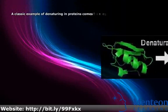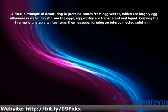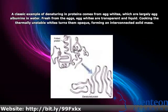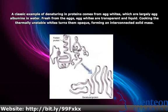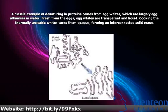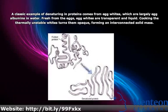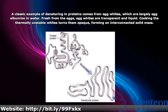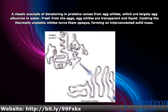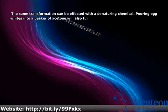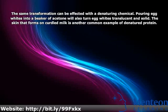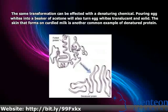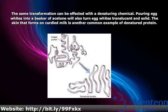A classic example of denaturing in proteins comes from egg whites, which are largely egg albumins in water. Fresh from the eggs, egg whites are transparent and liquid. Cooking the thermally unstable whites turns them opaque, forming an interconnected solid mass. The same transformation can be effected with a denaturing chemical: pouring egg whites into a beaker of acetone will also turn egg whites translucent and solid.